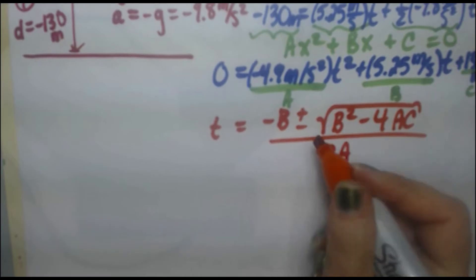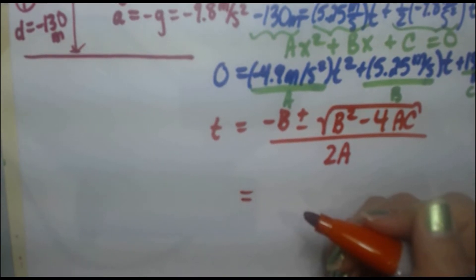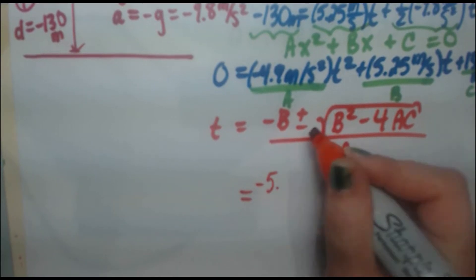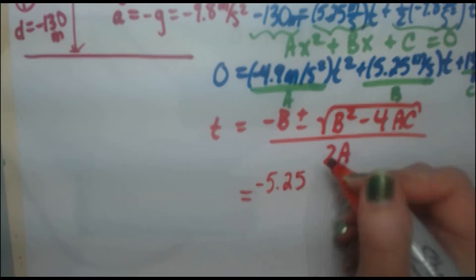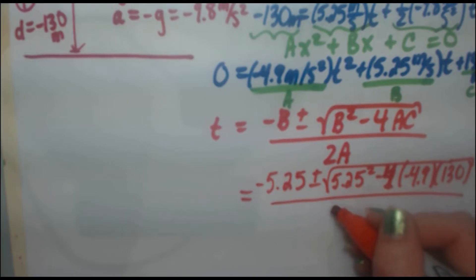So I'm not going to plug in the units because I already know they're consistent with SI. I'm not going to bother at this point. If you'd like to, you can. It's just going to get a little bit crowded. So let's plug in our numbers. Negative b is going to be negative of whatever's there. Minus 5.25 plus or minus the square root. If you square b, it's 5.25 squared minus 4a is minus 4.9. C is 130 all over 2a, 2 times minus 4.9.